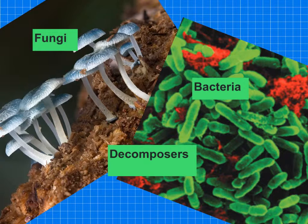They also need certain conditions. It needs to be moist, there needs to be a source of water, the temperature needs to be of a sufficient level to allow processes to occur, and there needs to be oxygen available because all of these species have to respire. Like humans, they will be respiring.